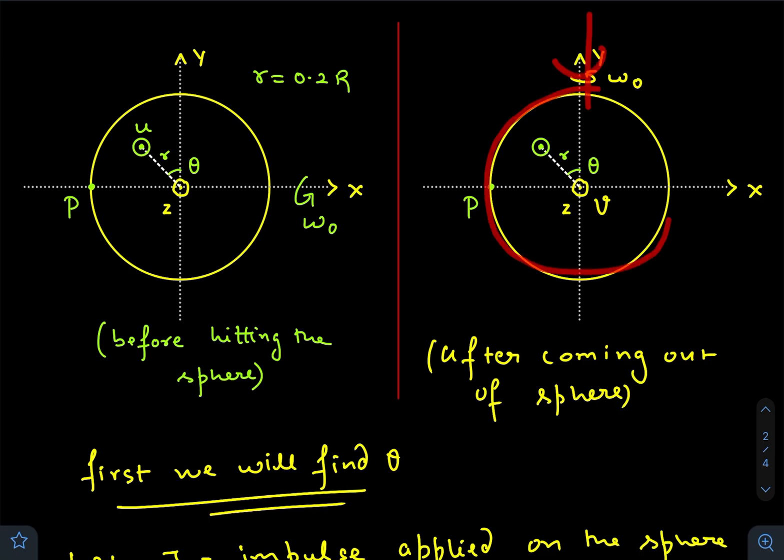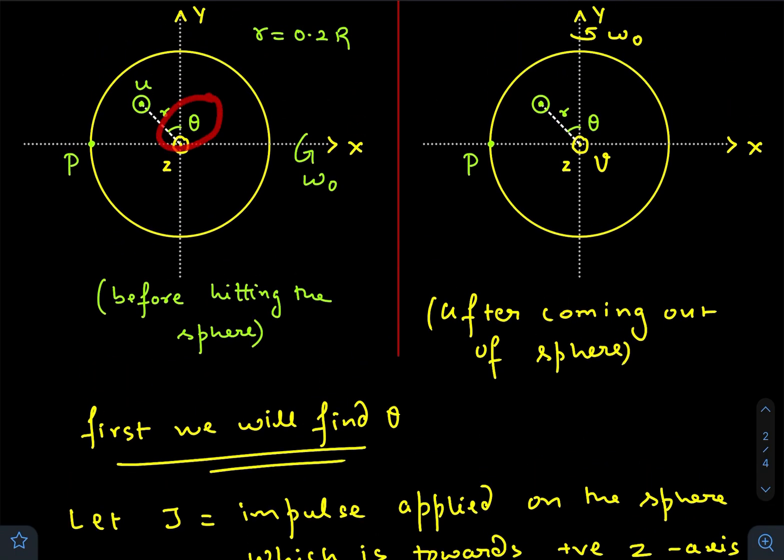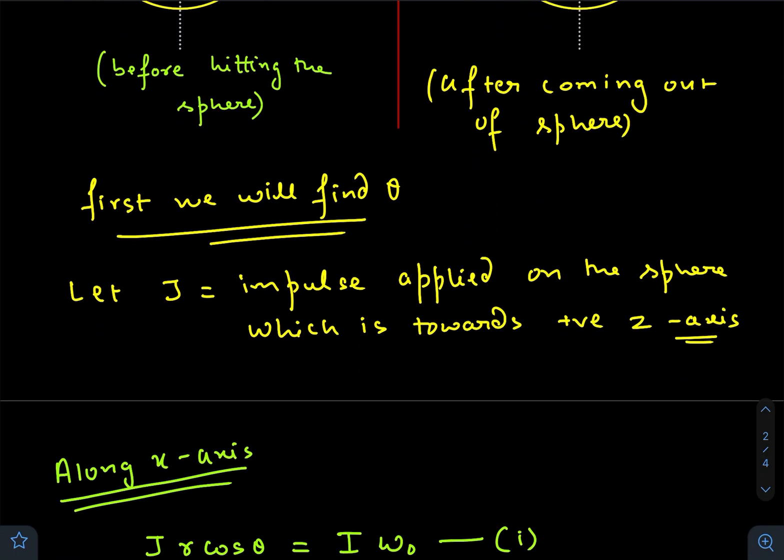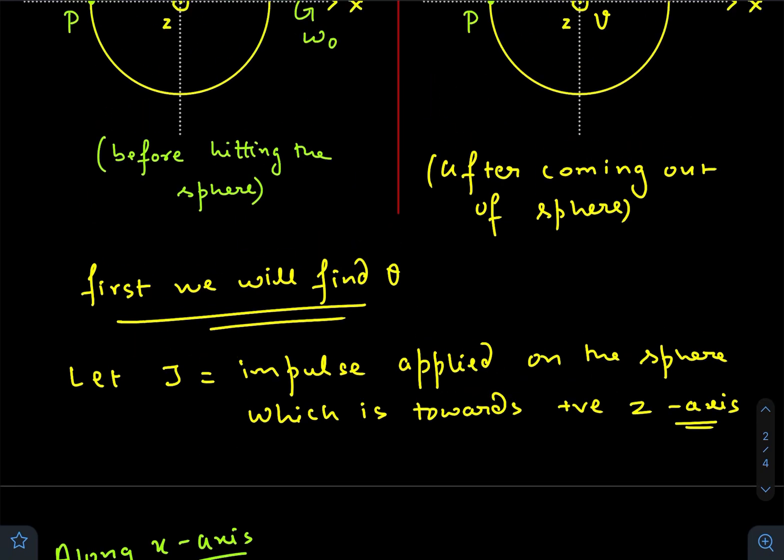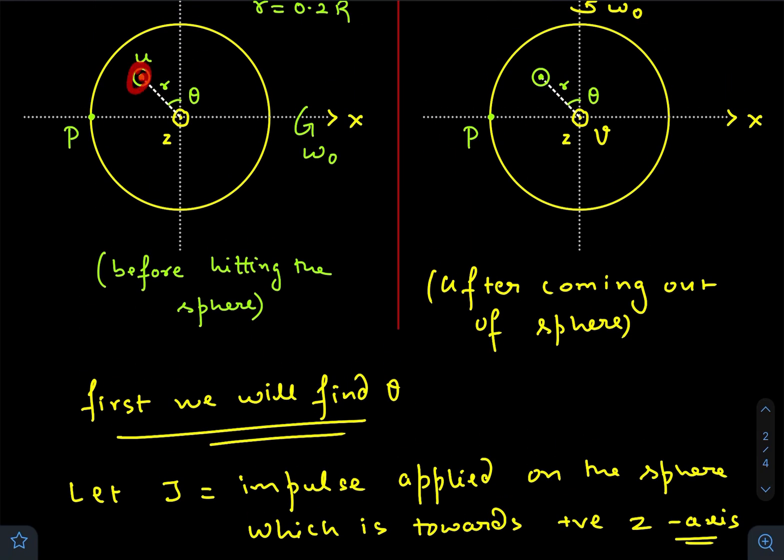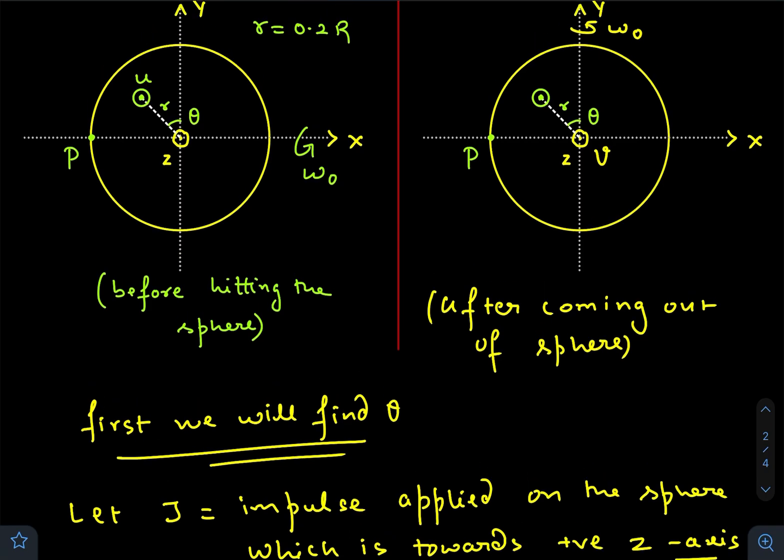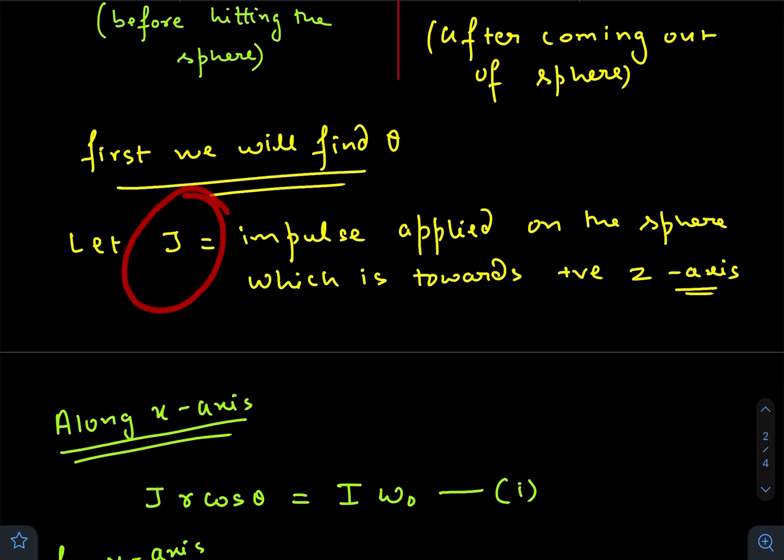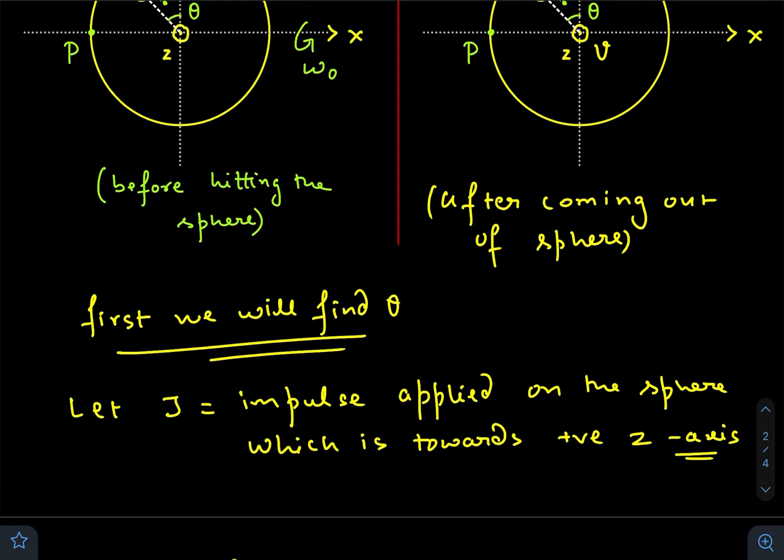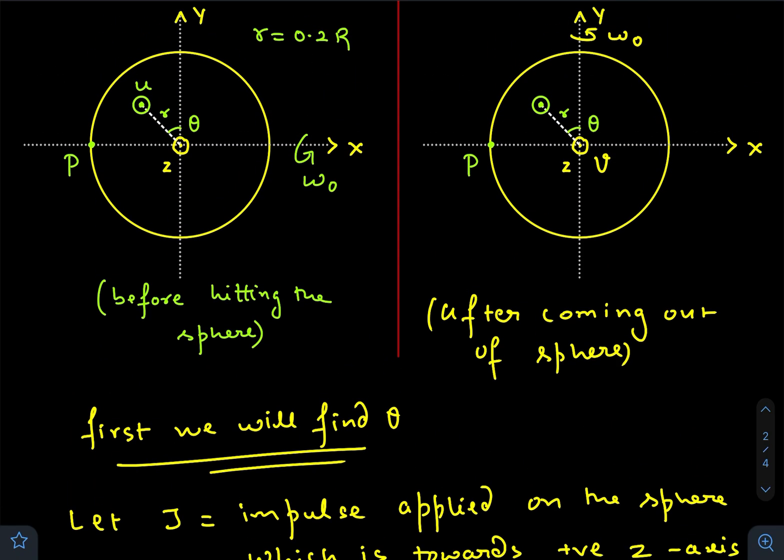First, let us find out the value of θ. J is the impulse applied on the sphere, which is towards the positive z, of course, because the bullet is coming towards your face. So the impulsive force will be along positive z. Due to this impulse, there will be an angular impulse with respect to the x-axis as well as with respect to the y-axis.